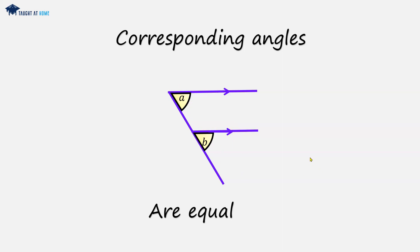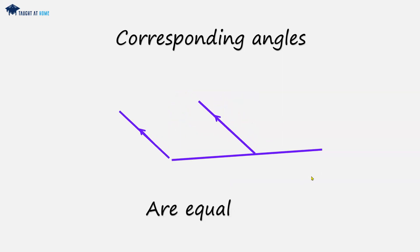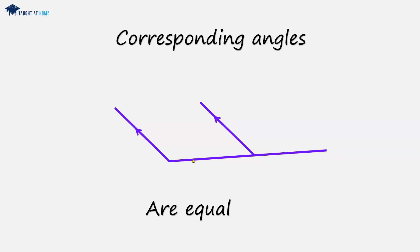The corresponding angles will be a and b, and these will be equal. Or we could have two parallel lines and a straight line that intersects both of them — the corresponding angles will again be a and b, and these will also be equal.